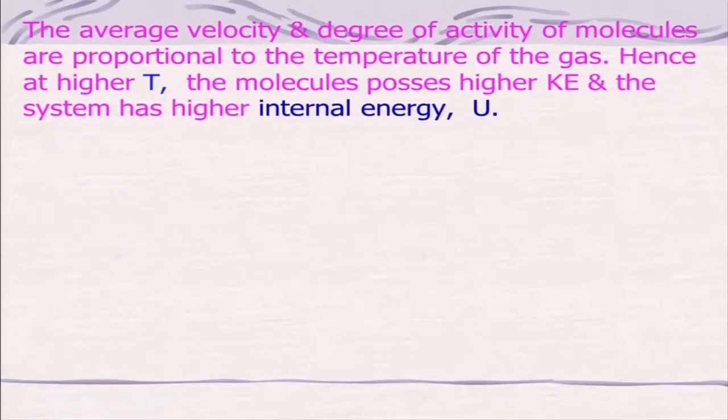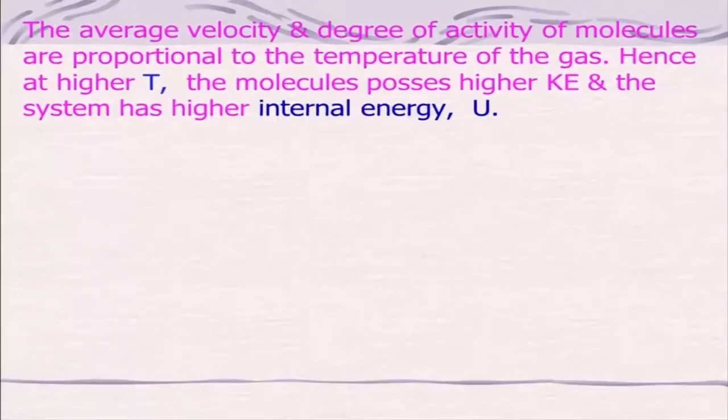If the temperature is higher, the molecules move at a higher velocity — similar to yourself: if you are agitated, your energy level is higher. At a higher temperature, molecules possess higher kinetic energy and the system has higher internal energy. We can summarize: U = ½·N·F·R·T, where N is the number of moles, F is the degree of freedom, R is the universal gas constant, and T is temperature — derivable from kinetic theory of gases.